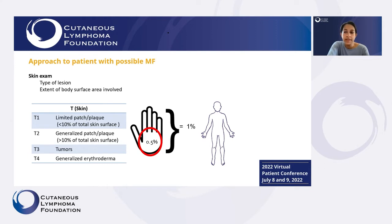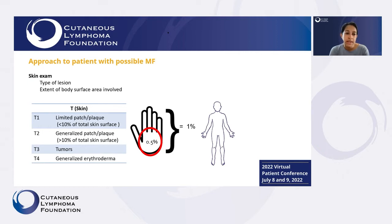When we do our skin exams, we're looking both at the type of lesion and how much of the skin is involved. The palm of your hand is considered to be about half a percent of your total skin surface area, and your full hand is considered to be one percent. When staging patients, part of staging involves looking at how much of the skin is involved. Patients with less than 10 percent of their skin involved are really in the very early stages, while patients who have tumors or generalized erythroderma or redness of the skin are considered to have more advanced stage disease.